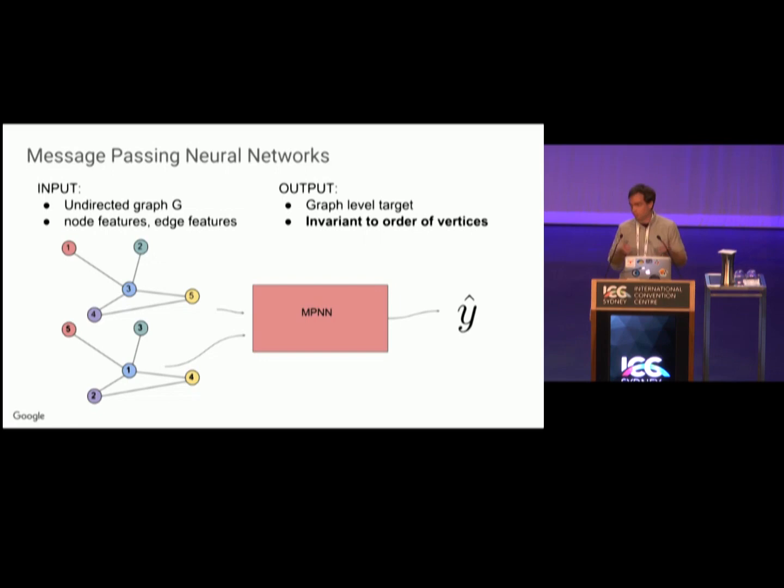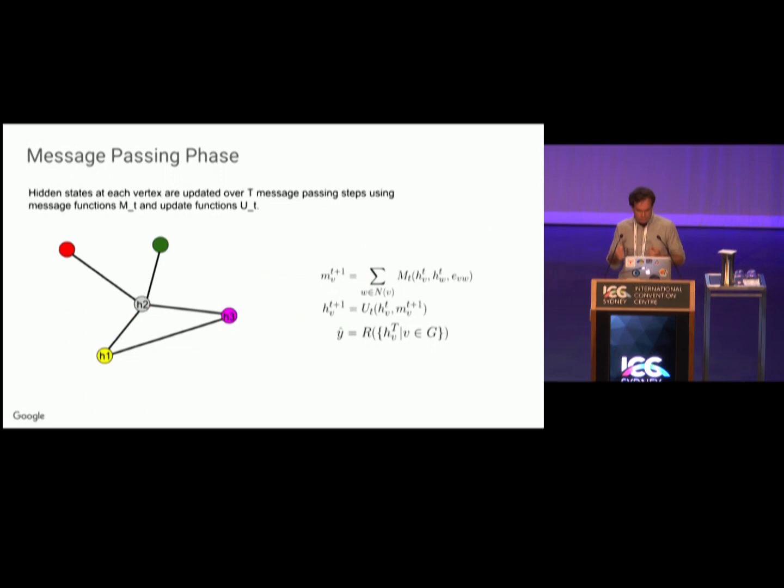I should mention you can also do node-level targets and edge-level targets, and this family works as well in those settings. Message-passing neural networks do computation in two phases: a message-passing phase followed by a readout phase.